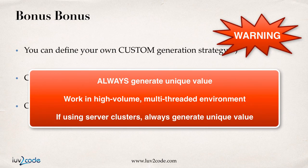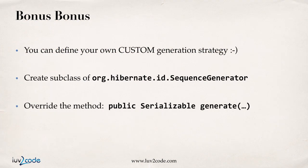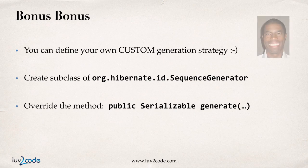A word of warning: you have to make sure that your generator will always generate a unique value. You also need to make sure that it works fine in a high-volume, multi-threaded environment. Also, if you're going to make use of a cluster or a farm of servers, you want to make sure that this generator will create a unique value in a clustered environment. So think about this first before you go off and write your own generator. The really cool thing though is that you can add your own custom generator if you have those appropriate business requirements, and you can go online and get more details on how to provide the implementation code for a sequence generator — there are a lot of examples out there on the web.